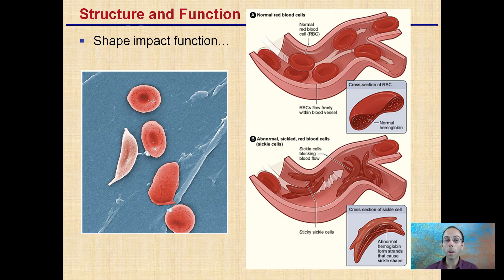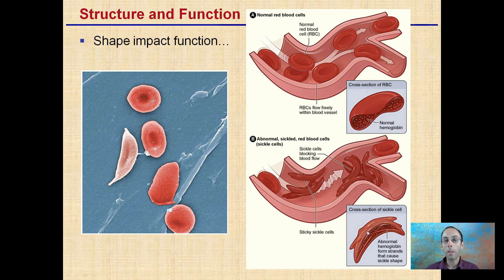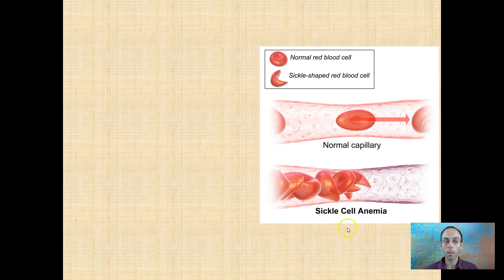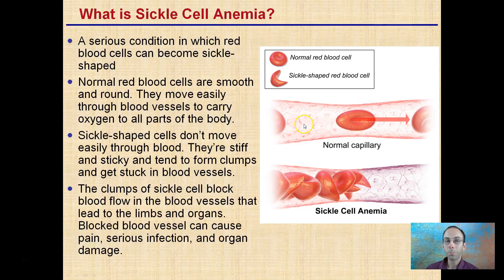As structure relates to function, shape has a direct impact on function. Normal red blood cells have a nice cross-section called a biconcave disc. Then we have the abnormal condition called sickle cell, where cells have a weird sickle or half-moon shape that greatly impacts the function of red blood cells. Normal red blood cells are smooth and round. They move very easily through our capillaries, arteries, and veins in our circulatory system, and they transfer oxygen very efficiently.